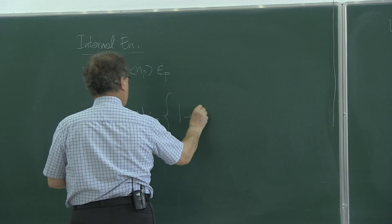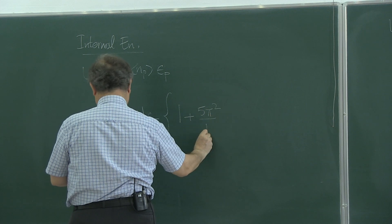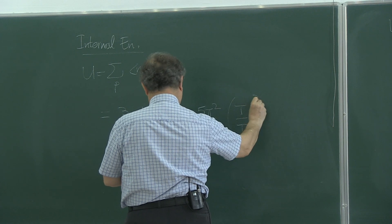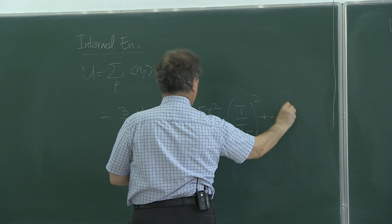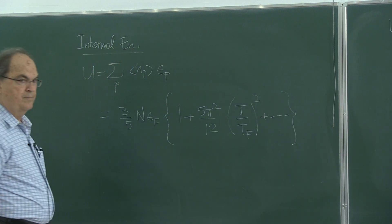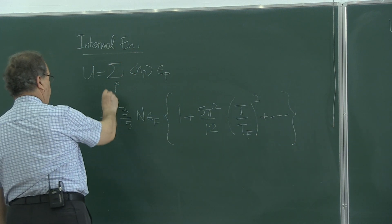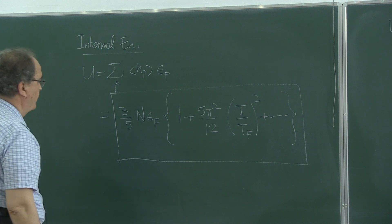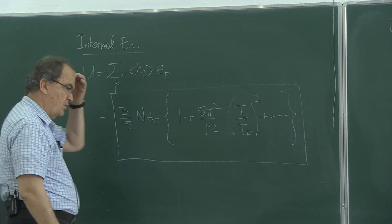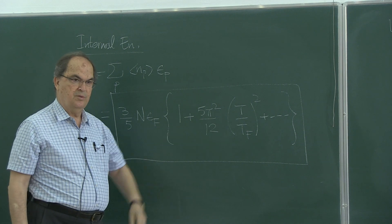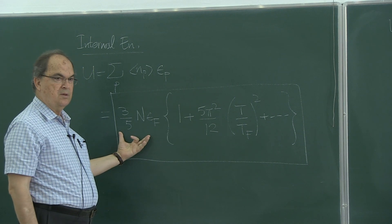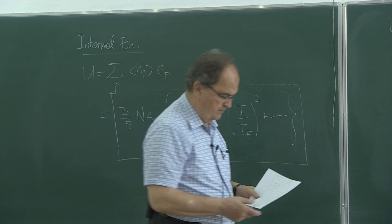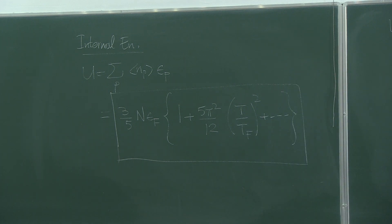That turns out to be 3 over 5 n eF, 1 plus 5 pi squared over 12, T over TF squared plus other terms. So, at T equals zero, these correction terms disappear. You have that result, 3 over 5 n eF. I will give you this calculation.